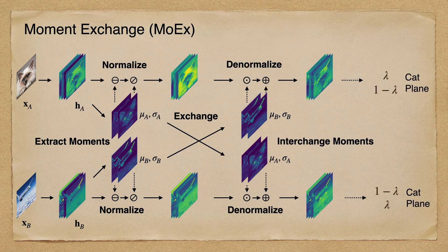Then we assign lambda and 1-lambda to the corresponding outputs for the training process. With such simple data perturbation — by exchanging the feature normalization as well as the corresponding labels — MOX demonstrates its efficacy across several recognition benchmark datasets, where it improves the generalization capability of highly competitive baseline networks with remarkable consistency.